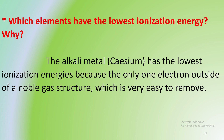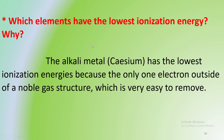In summary: ionization energy increases from left to right across a period, and decreases from top to bottom down a group. Ionization energy in this region has a defined limit. We will see you in the next video.